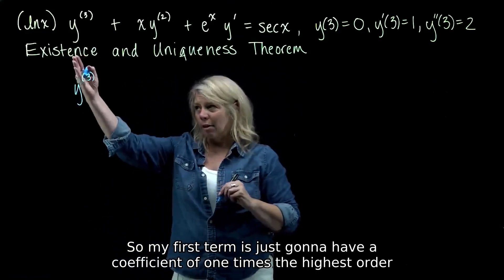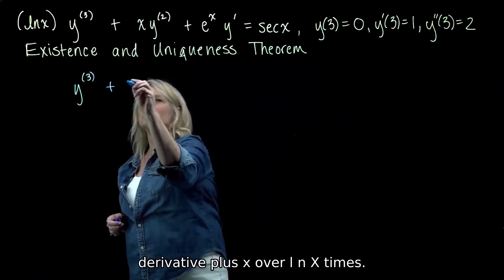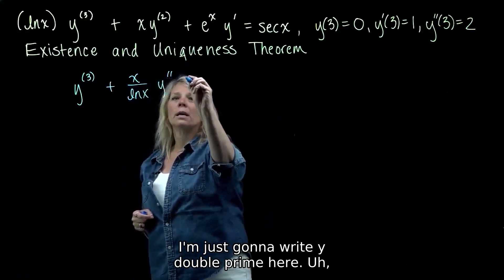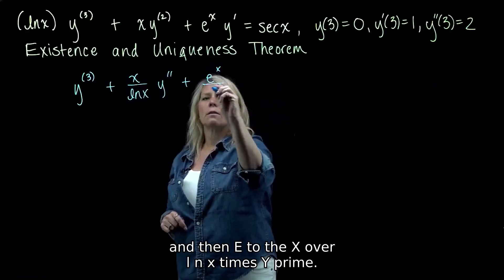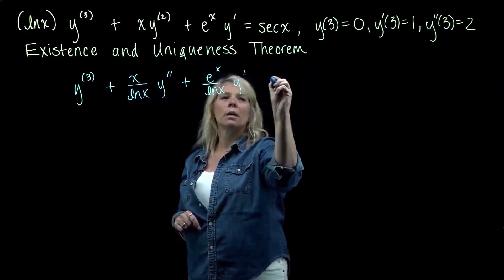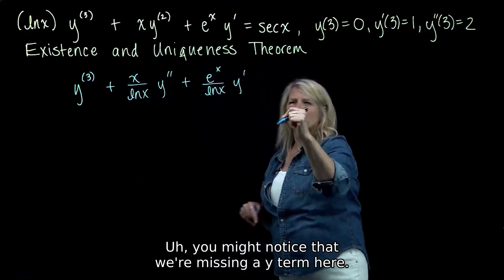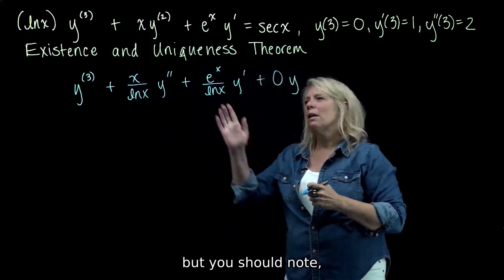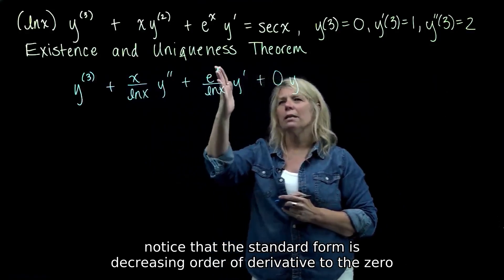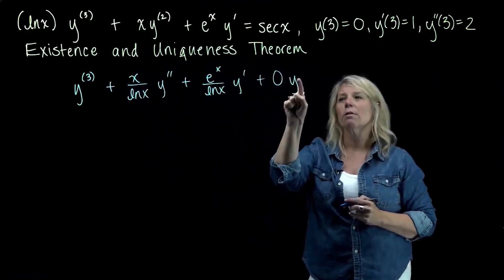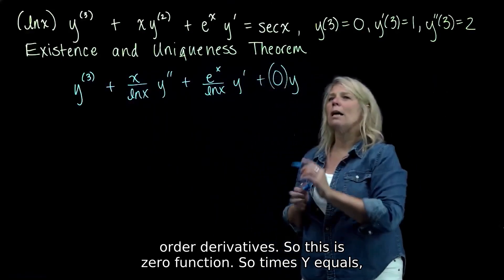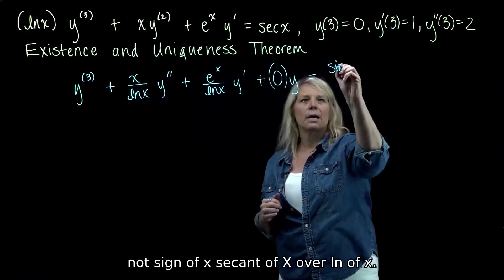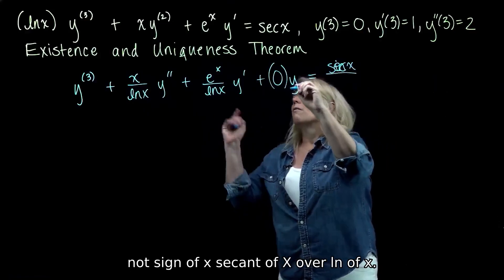So my first term is just going to have a coefficient of one times the highest-order derivative, plus x over ln(x) times y double prime, and then e^x over ln(x) times y prime. You might notice we're missing a y term here — I'll fill in a 0·y. The standard form goes in decreasing order of derivative down to the zeroth-order derivative, so this is 0 function times y, equals — and don't forget to divide the right-hand side also — secant of x over ln(x).